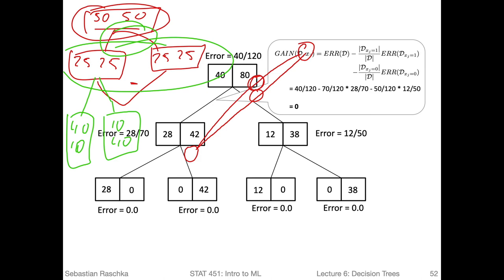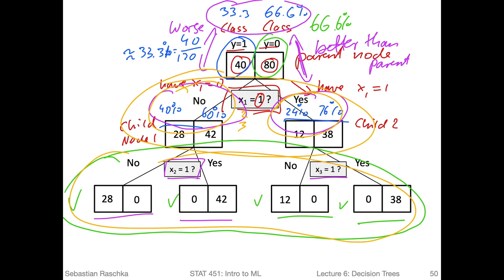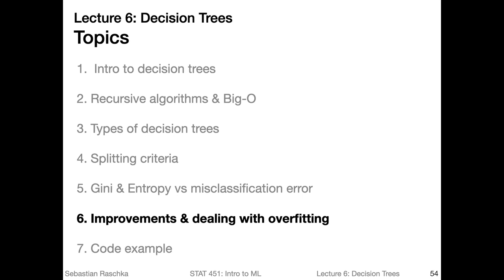The same effect applies to Gini impurity because the Gini is also a concave function (shown as the red dotted line). So both entropy and Gini have the same advantageous property. Of course, you could also modify the misclassification error by adding a small constant to prevent it from getting stuck, but entropy and Gini do that naturally. That is all I wanted to say about why entropy and Gini are used instead of the misclassification error.